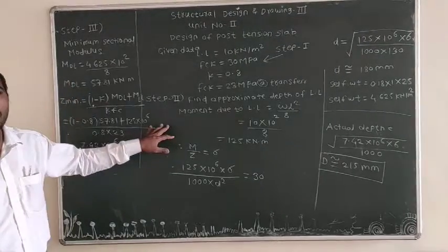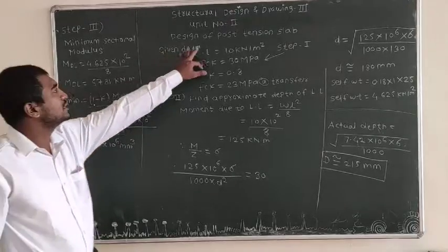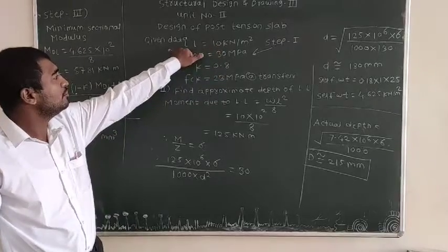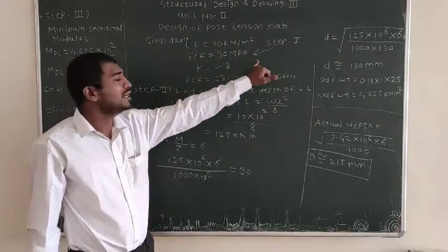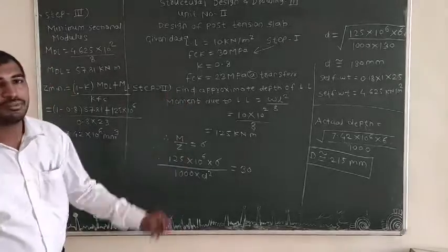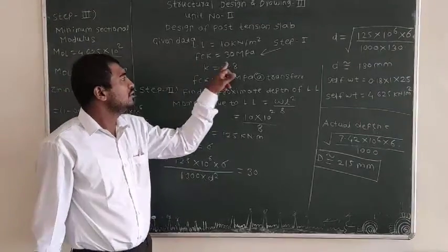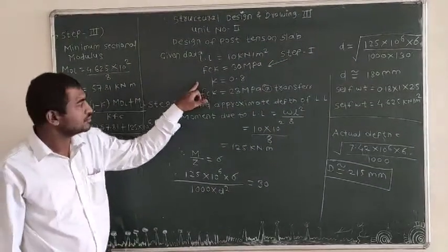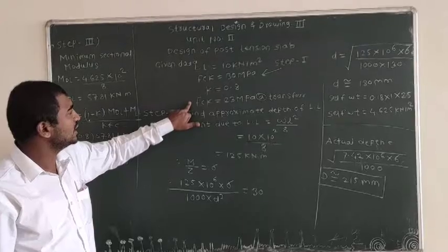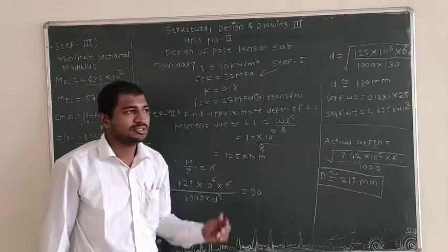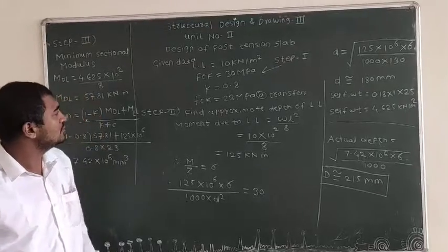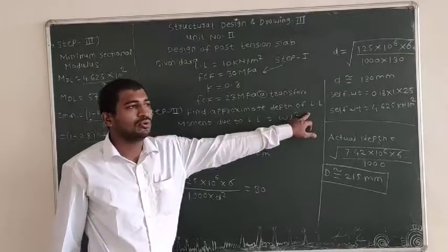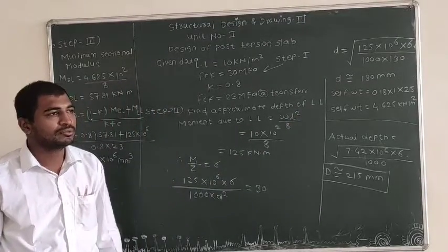Unit 2 is the Design of Post-Tension Slab. Step 1 is the given data: live load = 10 kN/m², FCK = 30 MPa, k = 0.8, and FCK at transfer = 23 MPa. Step 2 is to find the approximate depth based on live load. We find the moment occurring due to live load.